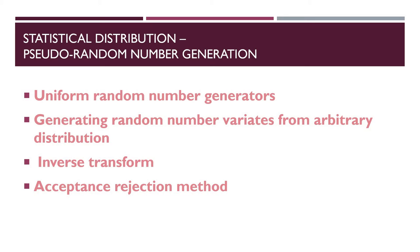Uniform random number generators are very important. Several methods are available for generating uniform random numbers, but currently the most popular is the LCG (Linear Congruential Generator). The book covers this method, but we will also discuss the current method in detail in coming videos.